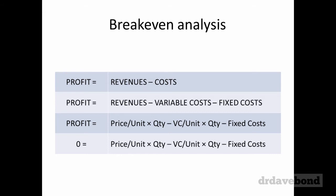In a previous video we had a look at setting up the breakeven analysis, which is expanding out profit equals revenues minus costs, all the way down to profit equals price per unit times quantity minus variable cost per unit times quantity minus fixed costs. And breakeven is a zero profit.